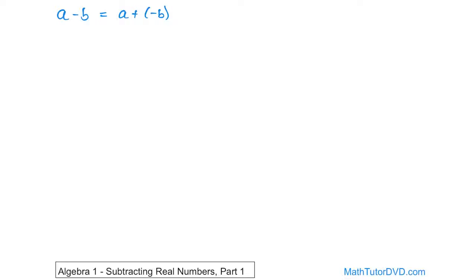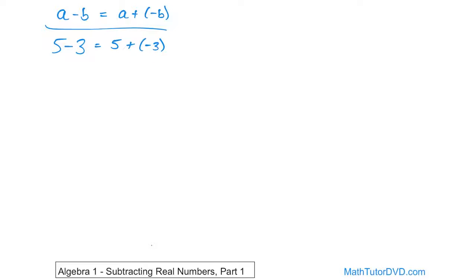Let's throw some numbers into it. Five minus three — something you've seen many times, and the answer is two. But in terms of algebra, this is the same thing as five plus a negative three. When you're adding a negative and positive number, you subtract the numbers and the sign goes with the larger absolute value. So five minus three is two, and the sign is positive, so the answer is two.